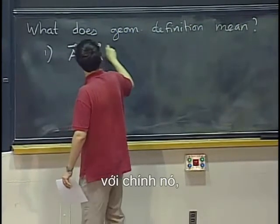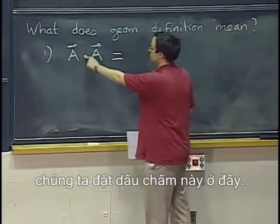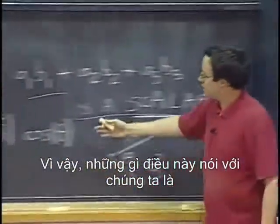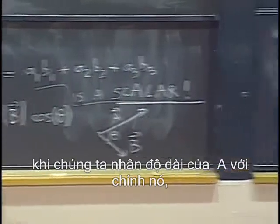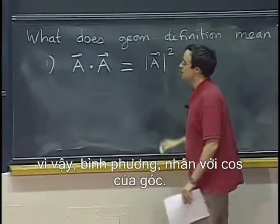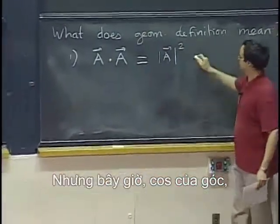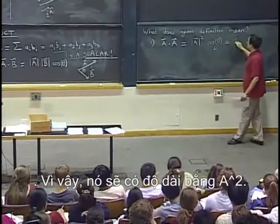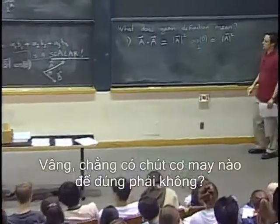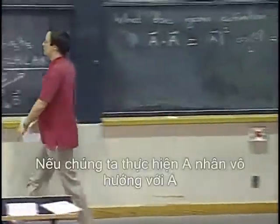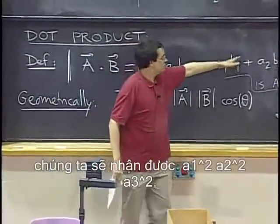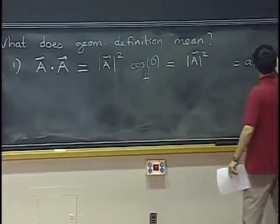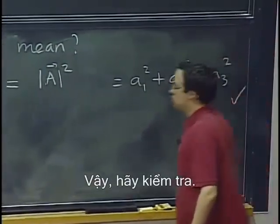If we multiply vector a with itself using the dot product — and by the way, we put a dot here, that is why it is called dot product — what this tells us is we should get the length of a with itself squared, times the cosine of the angle. But the cosine of an angle of zero is one, so that is going to be length a squared. If we do a dot a using the component formula, we get a1 squared plus a2 squared plus a3 squared, which is indeed the square of the length.